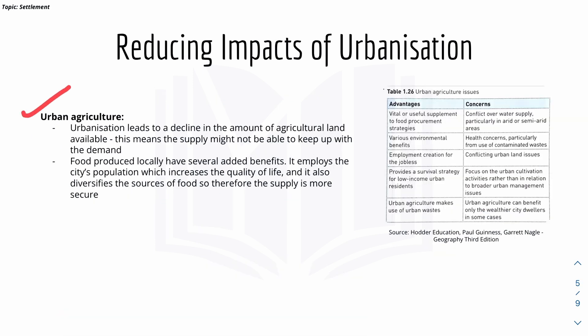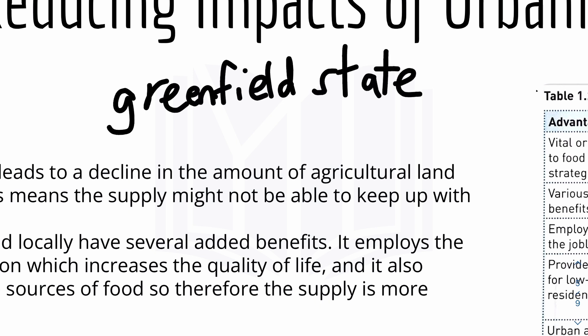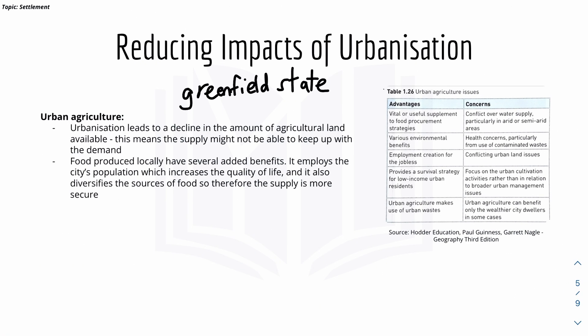Urbanization leads to a decline in the amount of agricultural land available as people build on those lands, described as greenfield sites — essentially untouched agricultural land where companies build their buildings. Food produced locally has several added benefits: it employs the city's population, which increases quality of life; it diversifies sources of food, making supply more secure; and the price of food will also be lower because it is locally sourced and produced.